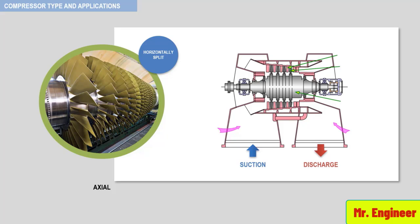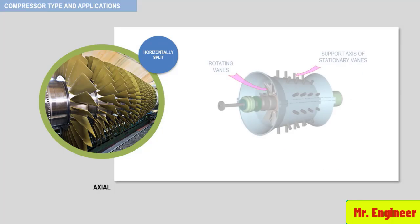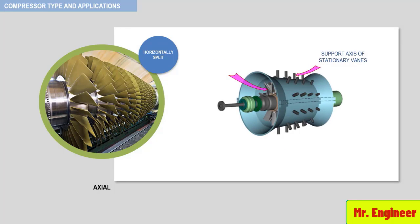As seen in the schematic, the rotating element consists of a single drum on which several rows of rotating vanes with aerofoil cross sections are attached. The vanes of successive rows keep decreasing in height. Between each of these rows of rotating vanes there is a row of stationary vanes.